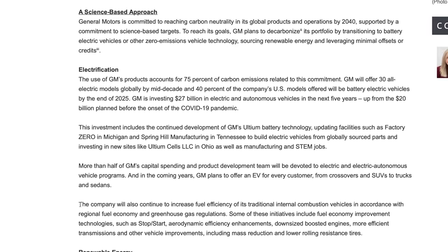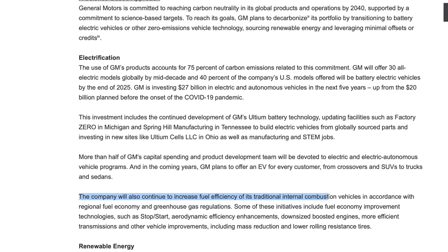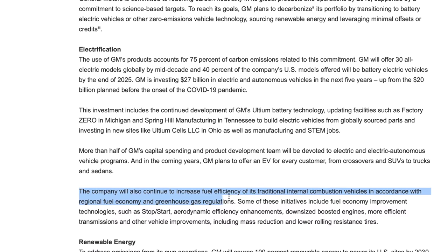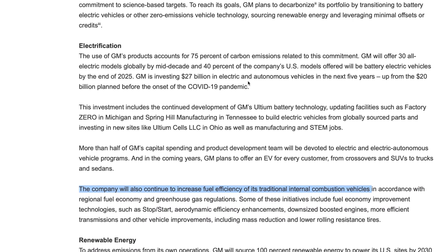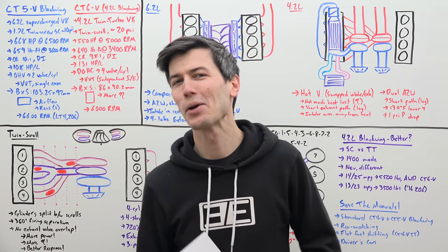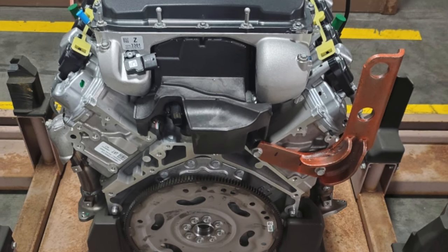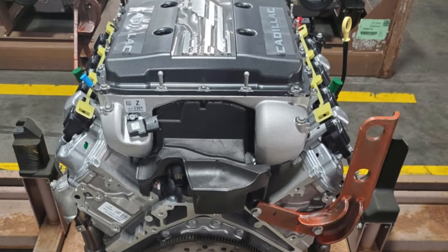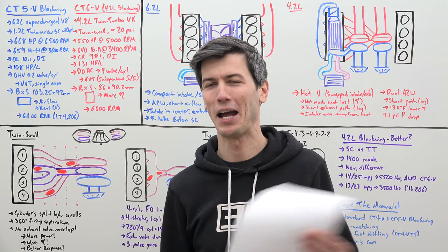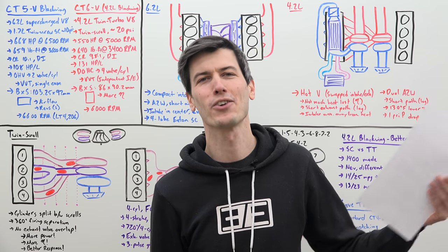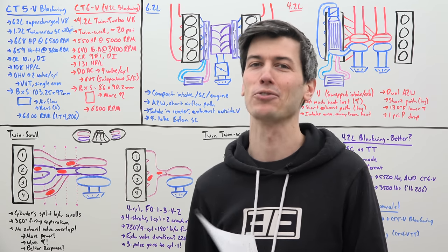They also said the company will continue to increase fuel efficiency of its traditional internal combustion vehicles. Now, on February 1st, just four days later, GM announces their most powerful Cadillac ever, the CT5V, with a supercharged 6.2 liter V8 engine producing 668 horsepower. How beautiful is that? GM, here to save the world with V8s and manual transmissions.